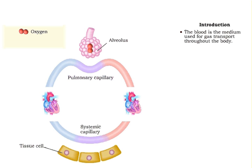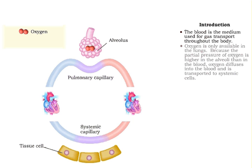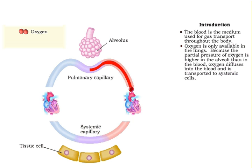The blood is the medium used for gas transport throughout the body. Oxygen is required for metabolic activity of all body cells, but is only available in the lungs. The partial pressure of oxygen is higher in the alveoli than in the blood, so oxygen diffuses into the blood and can be transported to the other parts of the body.